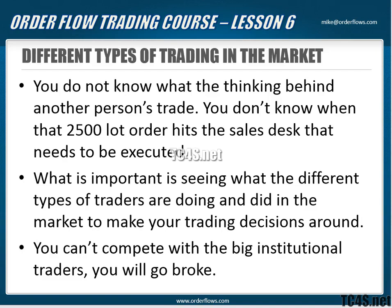What is important is seeing what the different types of traders are doing in the market to make your trading decisions. You can't compete with the big institutional traders — you'll go broke. What you want to do is see what they're doing and ideally be in the same direction. If you're trading 5, 10, or 25 lots and you're going against a bank accumulating a 2,500-lot position, you'll get run over. You don't know when the big order is going to hit the trading desk.